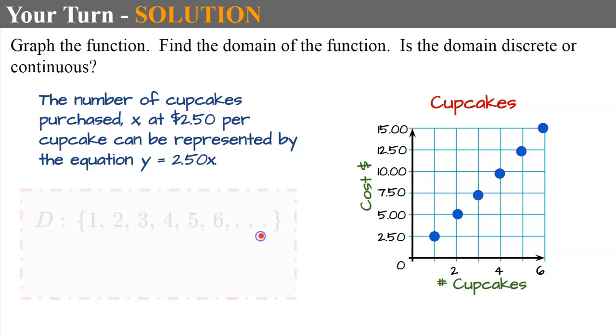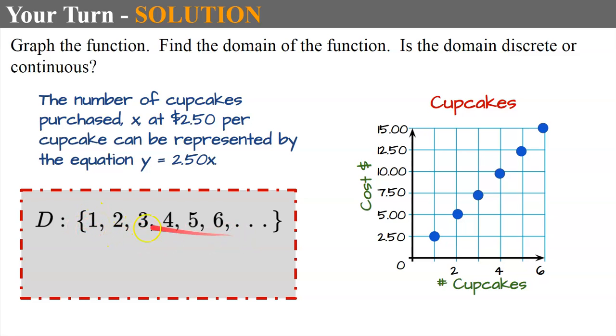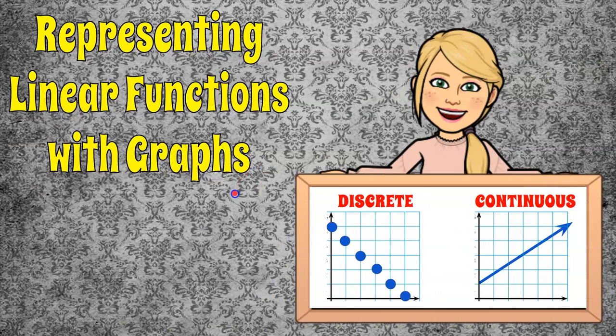Notice I do not have a line because my domain is going to be, I didn't even put zero in here. You could, but I started at one. It doesn't make sense to buy zero cupcakes, but you could. Some students do, some students don't. But I put dot, dot, dot in here because I have a function in here and it could keep on going. And this is discrete because I cannot buy half a cupcake. I don't think you could find a bakery to buy half of a cupcake. All right, and there you have it. That's how we represent linear functions with graphs and how you determine whether a domain is discrete or continuous.